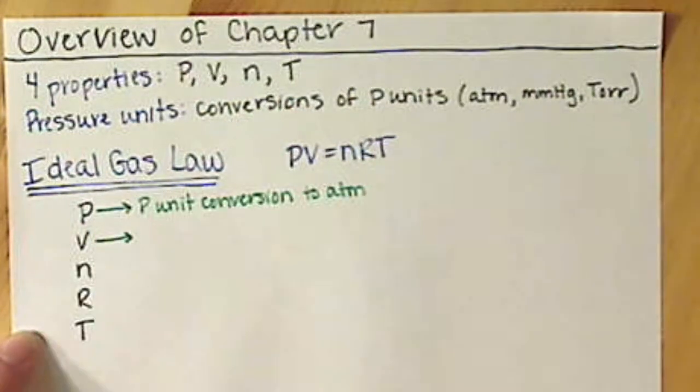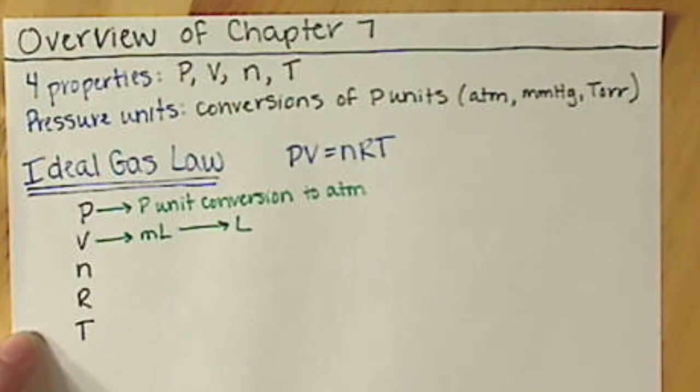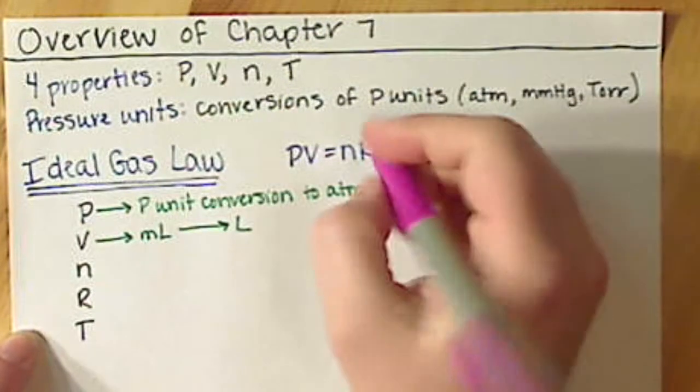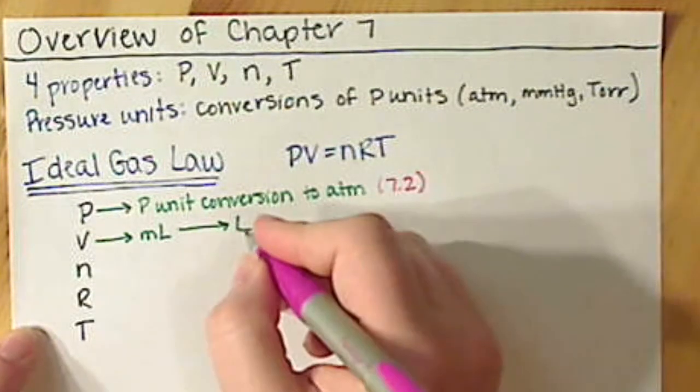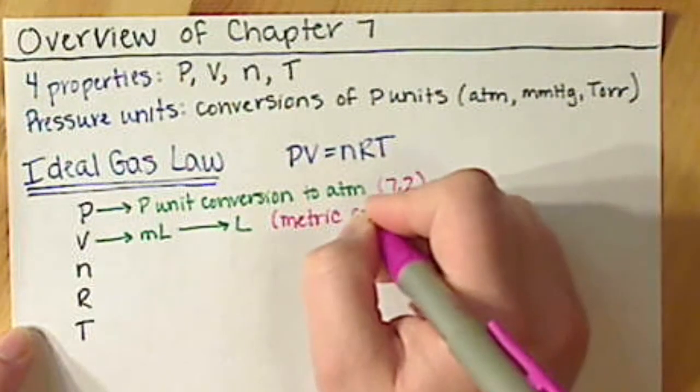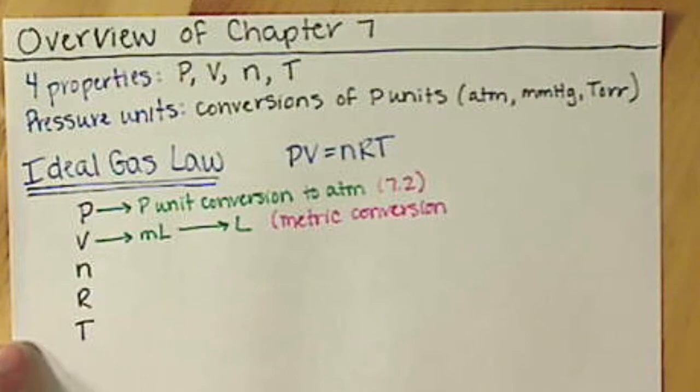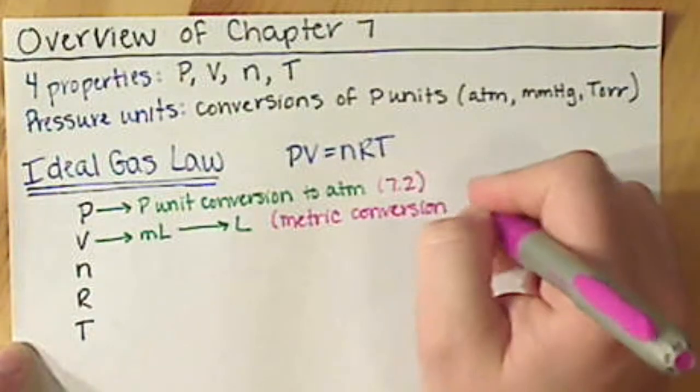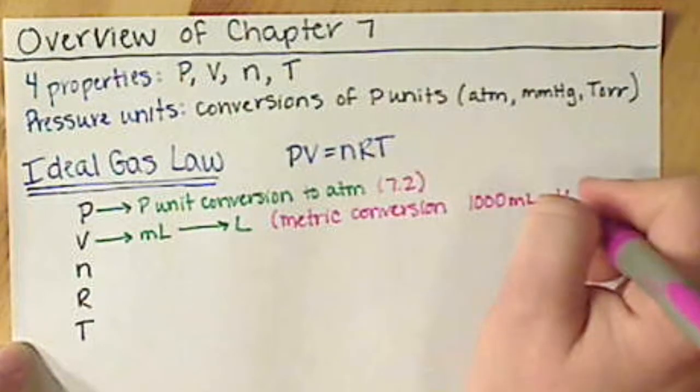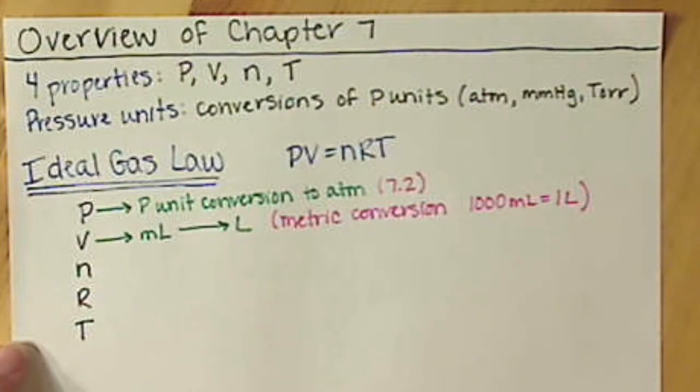When you're given volumes, usually the conversion that you're going to have to do is milliliters to liters. By the way, this conversion here stems from section 7.2, this conversion between milliliters and liters, this is a metric conversion. Remember your metric prefixes back in Chapter 1, and hopefully you'll get this one and memorize really quickly if it's not already, but you have a thousand milliliters is equal to one liter. That's by far the most common conversion that you'll make for volumes, actually both in Chapter 7 and in Chapter 8 and Chapter 10.